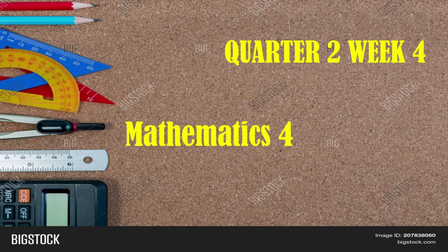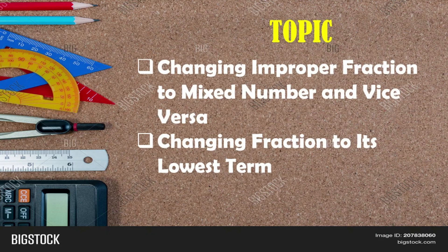Welcome to week 4, quarter 2 in mathematics 4. Our topic for this week is changing improper fraction to mixed number and vice versa, and changing fraction to its lowest term. We are going to change improper fractions into mixed numbers, mixed numbers to improper fractions, and find the lowest term of a fraction.